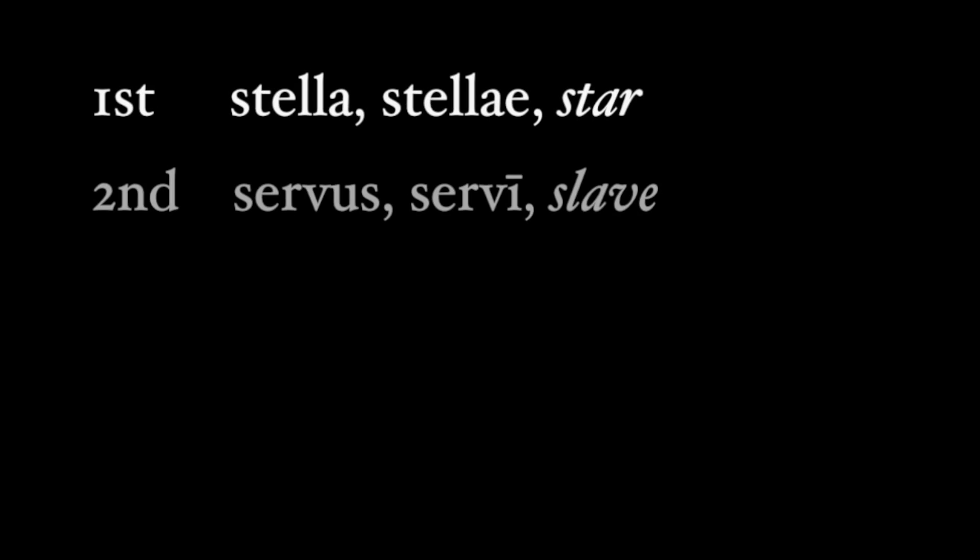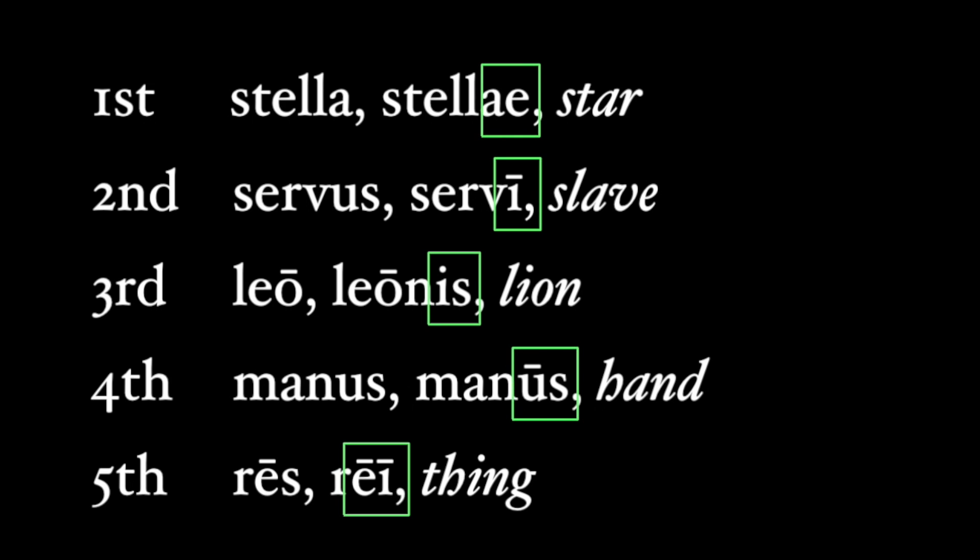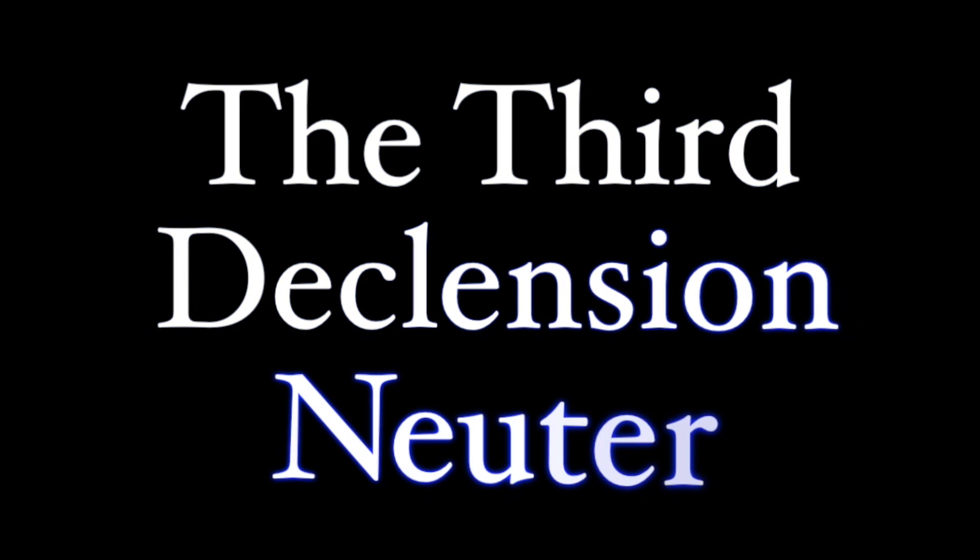Latin nouns are divided into five distinct groups called declensions, based on how these nouns end and how they change because of their grammar. We group nouns into these declensions based on the ending of the genitive case. This video covers neuter nouns of the third declension.